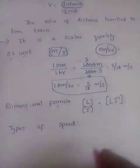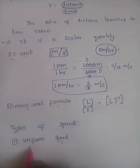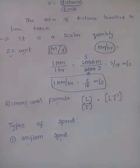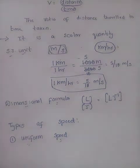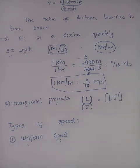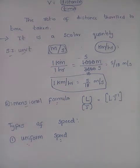The first type is uniform speed. If a body moves equal distances in equal intervals of time, it is considered to have uniform speed. For example, if you are moving on a road and you travel 10 kilometres in 10 minutes, then next 10 kilometres in 10 minutes, and again 10 kilometres in 10 minutes — you are covering 10 kilometres every 10 minutes. Distance is constant and time covered is also constant, so you are moving with uniform speed.